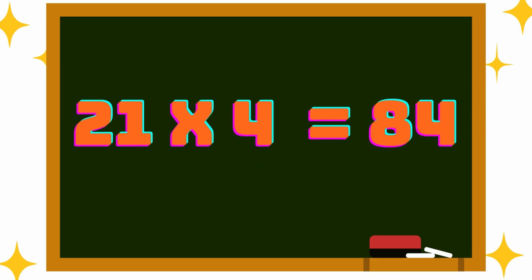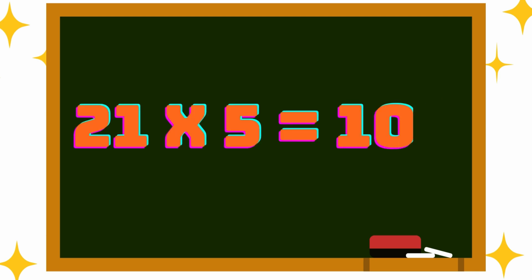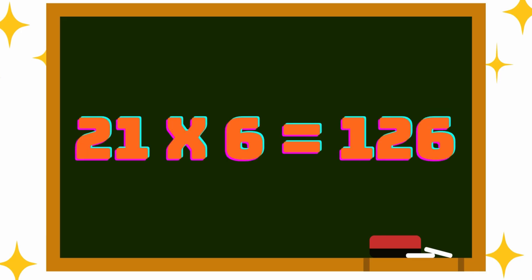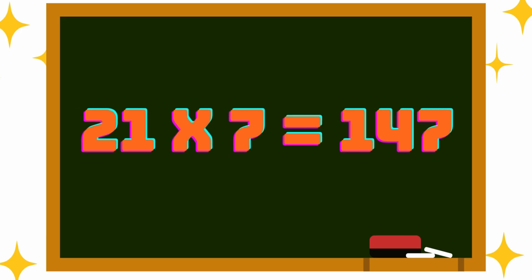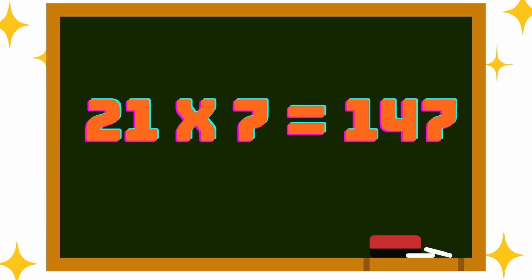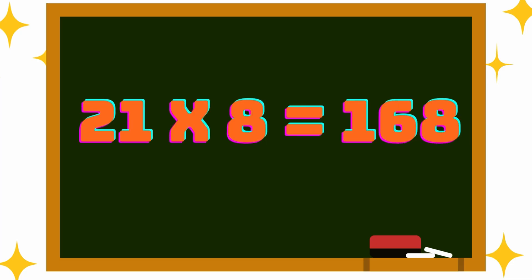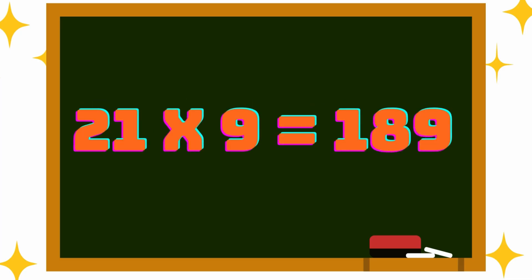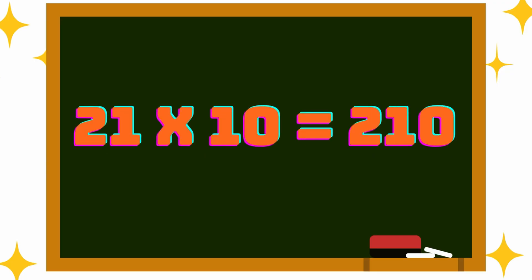21 into 5 is 105, 21 into 6 is 126, 21 into 7 is 147, 21 into 8 is 168, 21 into 9 is 189, 21 into 10 is 210.